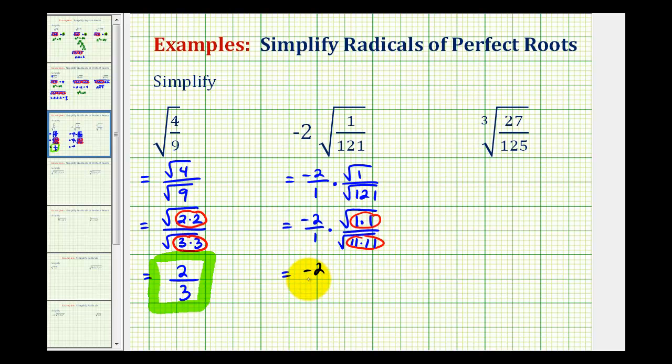We would have negative 2 over 1 times the square root of 1 is 1, and the square root of 121 is equal to 11. So negative 2 over 1 times 1 over 11 is equal to negative 2 elevenths.